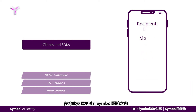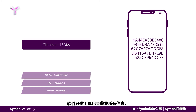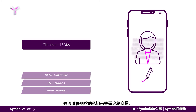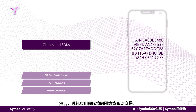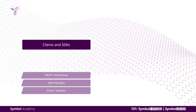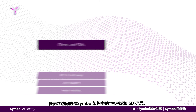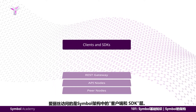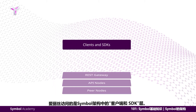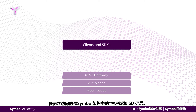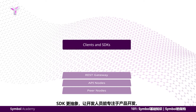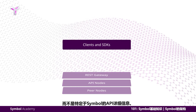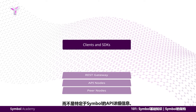Before the transaction is sent to the Symbol network, the software development kits gather all the information together and have the transaction signed by Alice's private key. The wallet app then announces the transaction to the network. Up until here, Alice is accessing the clients and SDKs tier of the Symbol architecture. Through its higher level of abstraction, the SDKs free up developers to focus on product development rather than on the Symbol-specific API details.